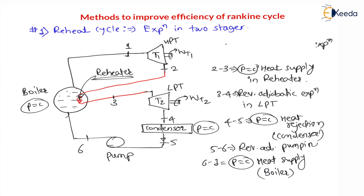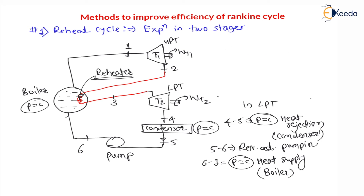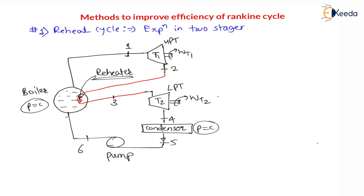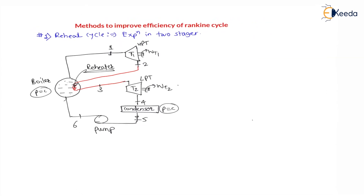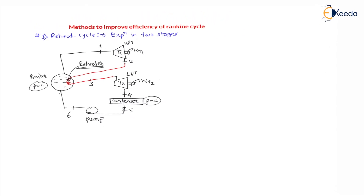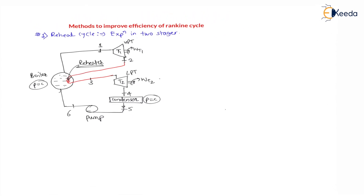Now let us understand these various processes on a temperature versus entropy diagram. There are total 6 processes. We will draw a temperature versus entropy diagram — temperature on the y-axis and entropy on the x-axis.